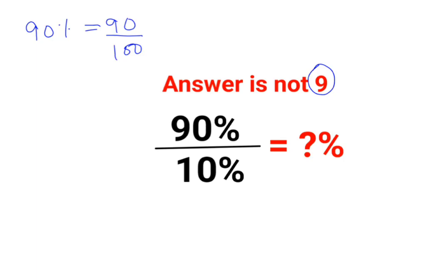So using the same logic, I can say that 90% is basically 90 upon 100 divided by 10% means 10 upon 100. Now,